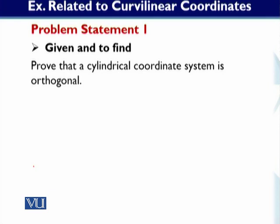It's a very simple statement. You have a cylindrical coordinate system and a rectangular coordinate system. In the rectangular system, we have x, y, z three axes, and the unit vectors are called i, j, k. We know that all three of them are perpendicular to each other, which means that system is orthogonal. We have to prove exactly the same pattern here.